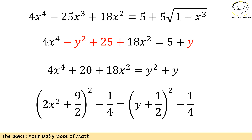Now let's apply the same approach to the left hand side. I have 4x⁴, which tells me I should start with 2x². I also have 18x², which I need to generate. Using the (a + b)² identity, I need 9/2 to create the 18x² term. So the left hand side becomes (2x² + 9/2)². Comparing this with what I had, I find there is one extra 1/4 that needs to be accounted for.